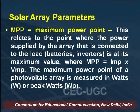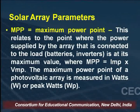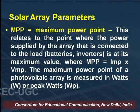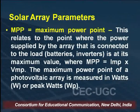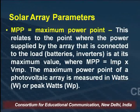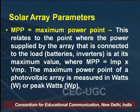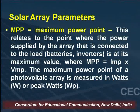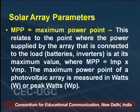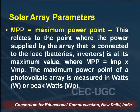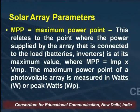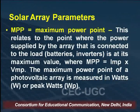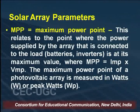Next is the maximum power point. This is the point where the power supplied by the array to the load — batteries, inverters — is at its maximum value. The maximum power point occurs where IMP multiplied by VMP is maximum, meaning where the current-times-voltage output is maximum. The maximum power point of a photovoltaic array is measured in watts or peak watts.